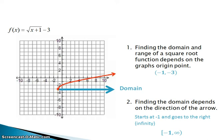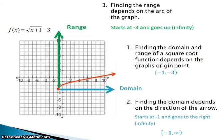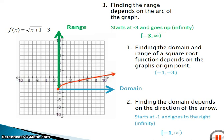The range works the same way — only this time we're looking at the arc. We see that it's arcing up, and the y-value of the origin point is negative 3, so that's where the range starts. It starts at negative 3 and goes up. Using interval notation, we write it as [−3, ∞) — negative 3 with a square bracket because it's included, all the way up to infinity with a parenthesis. Pause now and copy everything on this slide along with any questions you might have.